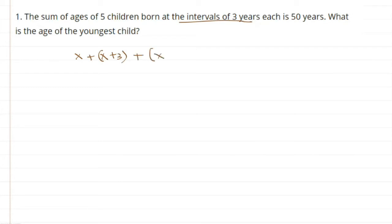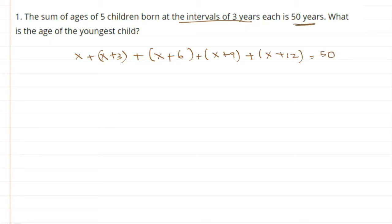The next child will be x plus 3 plus 3, which is x plus 6. The next child will be x plus 9. And the last child will be x plus 3 plus 3 plus 3 plus 3, which is x plus 12. The sum equals 50 years.